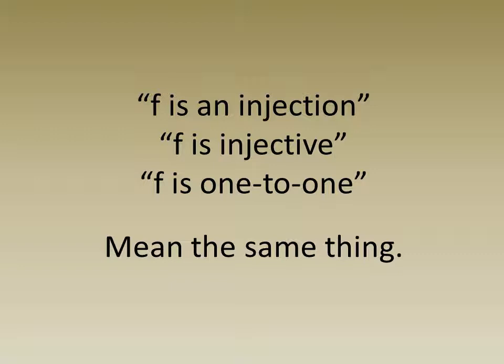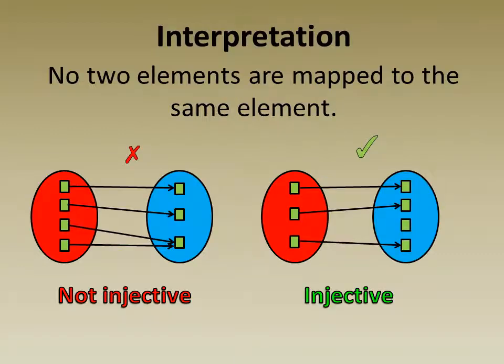Note that the statements f is an injection, f is injective, and f is one-to-one all mean the same thing. In a visual interpretation, we see that no two elements are mapped to the same element. The right mapping is injective and the left is not.